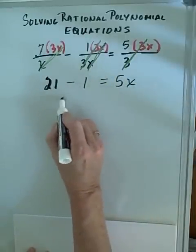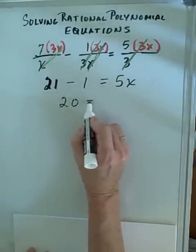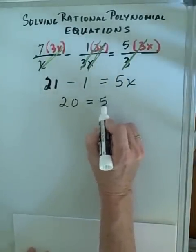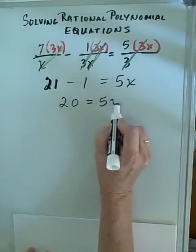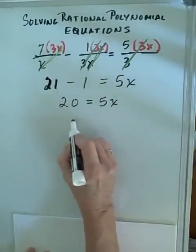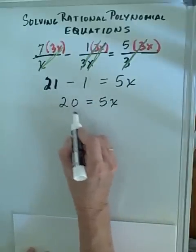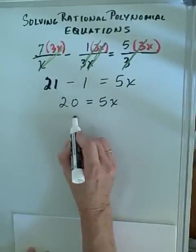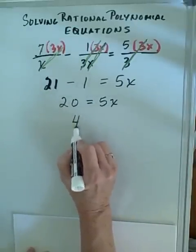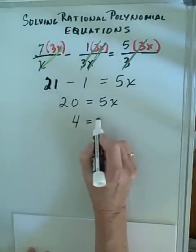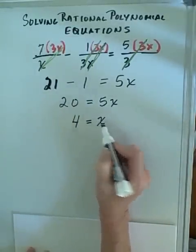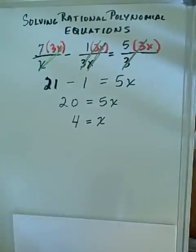This gives us 20 equals 5x. Therefore, dividing each side by 5, we get x equals 4, which is our solution.